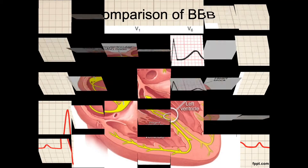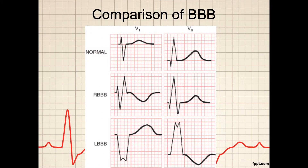This illustration shows examples of ECG changes that can occur with bundle branch block. On the top, we have normal-looking QRS-T complexes. In the middle, we see the characteristics of a right-sided bundle branch block, showing the widened, prolonged QRS. On the bottom, we see the left bundle branch block with the double QRS complex, also known as rabbit ears.